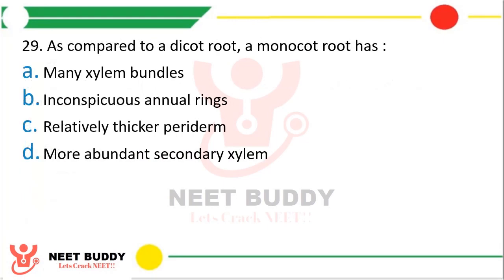Question 29: As compared to a dicot root, a monocot root has: many xylem bundles, inconspicuous pith rings, relatively thicker periderm, or more abundant secondary xylem. The correct answer is option A — many xylem bundles.